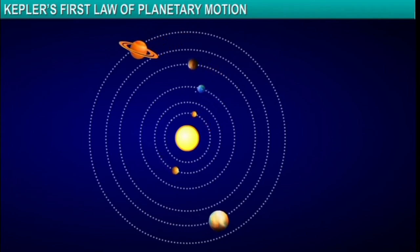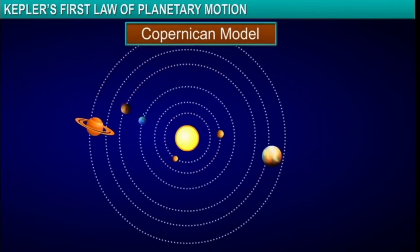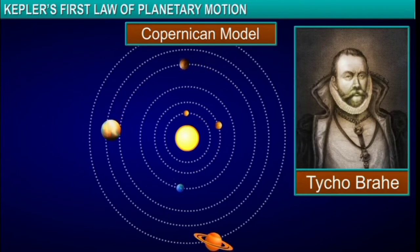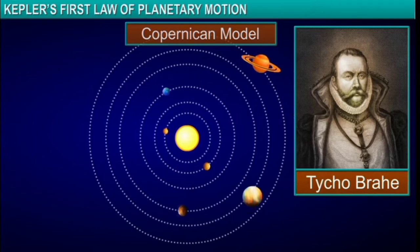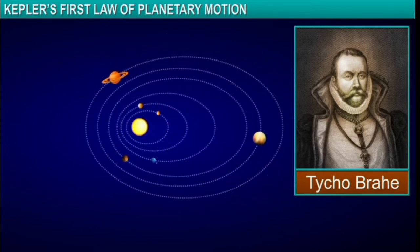Kepler studied the Copernican model that showed the Sun at the center of the solar system with planets revolving around the Sun in circular orbits. He detected shortcomings in the Copernican model using data gathered by his teacher, Tycho Brahe, and concluded that all planets revolve around the Sun in orbits which were elongated rather than perfect circles.